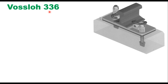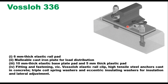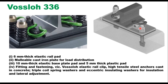The second type is Vossloh 336. The important features are similar to the plinth type assembly. Vossloh 336 is a type of fastening system used for urban transportation. It also has a 6 mm thick elastic rail pad below the rail seat, then a malleable cast iron plate for load distribution, and below that a 10 mm thick elastic base plate and 5 mm thick plastic pad, which provides the elasticity in the track. The fittings and fastenings include the Vossloh elastic rail clip, high tensile steel anchors cast in concrete, triple coil spring washers, and eccentric insulating washers for insulation and lateral adjustment.